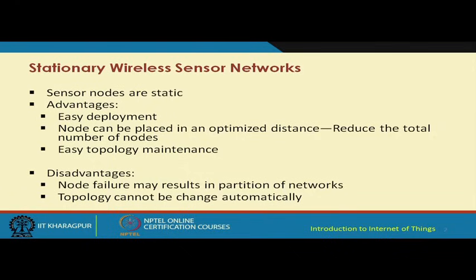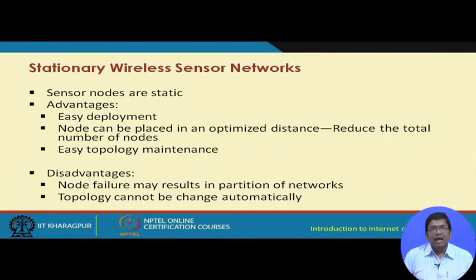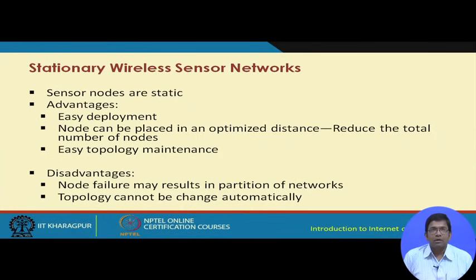Sometimes it is also known as the stationary sensor network. As the name suggests, the nodes are stationary or static — they do not move. Once deployed, they maintain their positions. The advantage is that it is easier to deploy sensor nodes in a stationary sensor network; the nodes can be placed in an optimized manner and topology maintenance is easier.